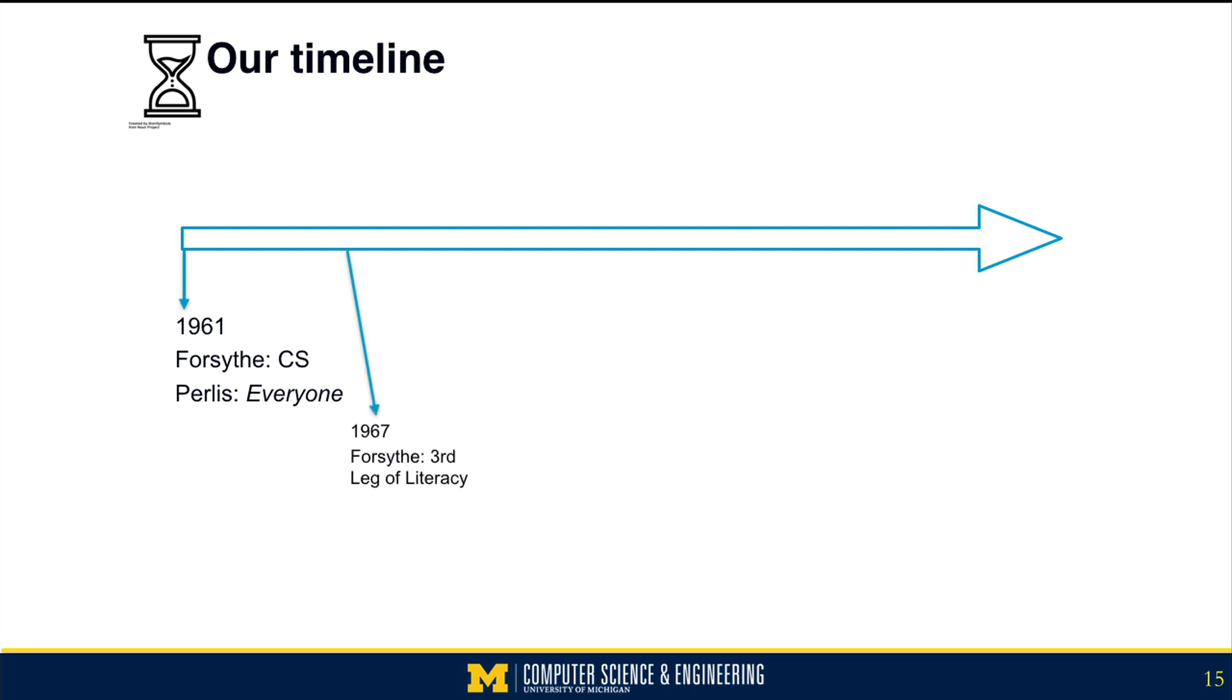In '67, Forsyth made the argument that it's the third leg of literacy - that we want kids to be fluent in their natural language and textual language, we want kids to be fluent in mathematics, but this computational stuff is also really important. In 1968, it was the first computer science curriculum, and it's when SIGCSE, the Special Interest Group in Computer Science Education, was first formed. So now here we are, 2019 - it's the 50th anniversary of SIGCSE. And it's reasonable to ask: have we achieved Alan Perlis's vision? Do we have computational literacy for all?